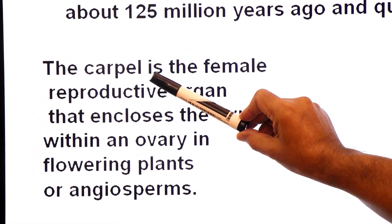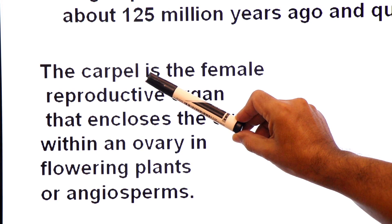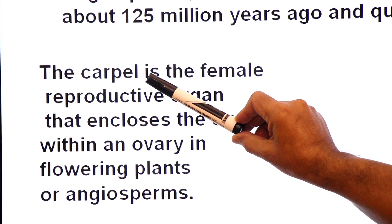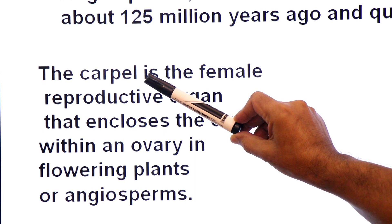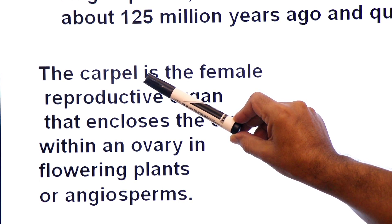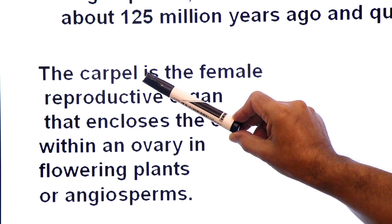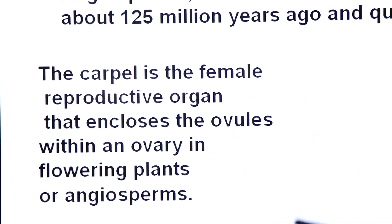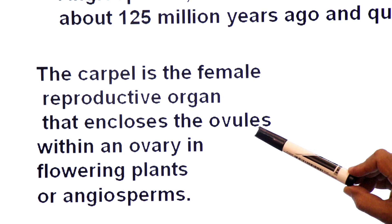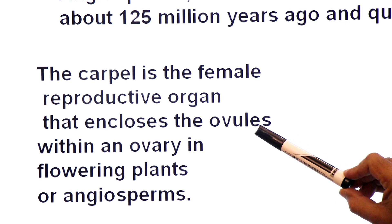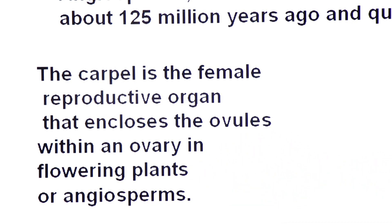The carpel converts megaspores into female gametophyte and ovules present inside the carpel are converted into seeds. The carpel is the female reproductive organ that encloses ovules within an ovary in flowering plants or angiosperms.